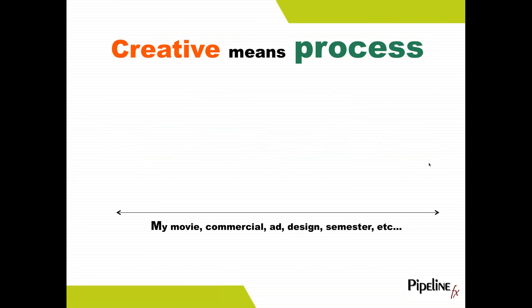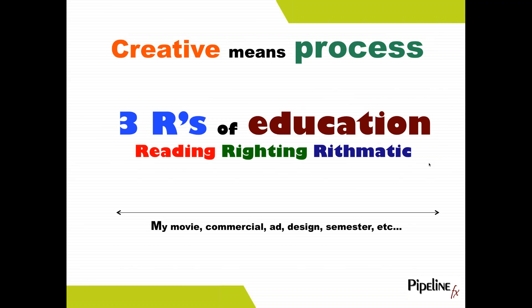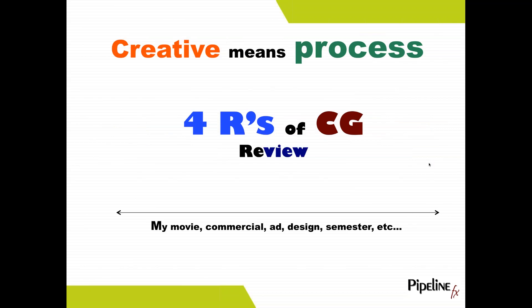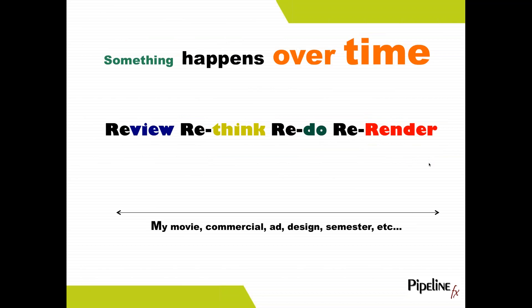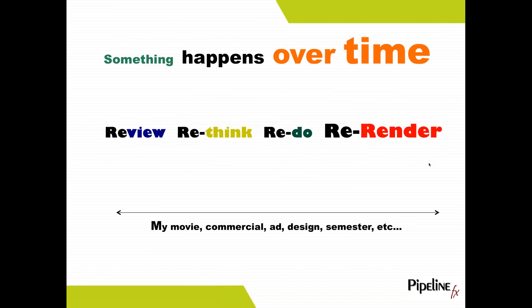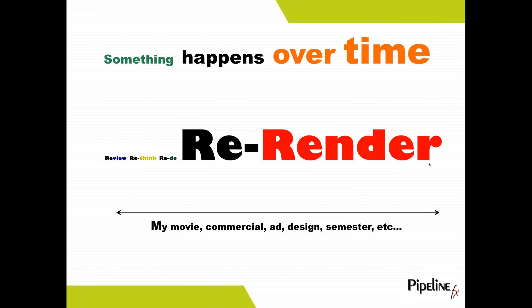There is a process in creative work. In education we talk about reading, writing, and arithmetic, but in computer graphics we talk about reviewing our work, rethinking the work, redoing the work, and then re-rendering the project. What happens over time is that as we review, rethink, and redo, the re-rendering gets longer and longer and takes more of this iterative cycle.